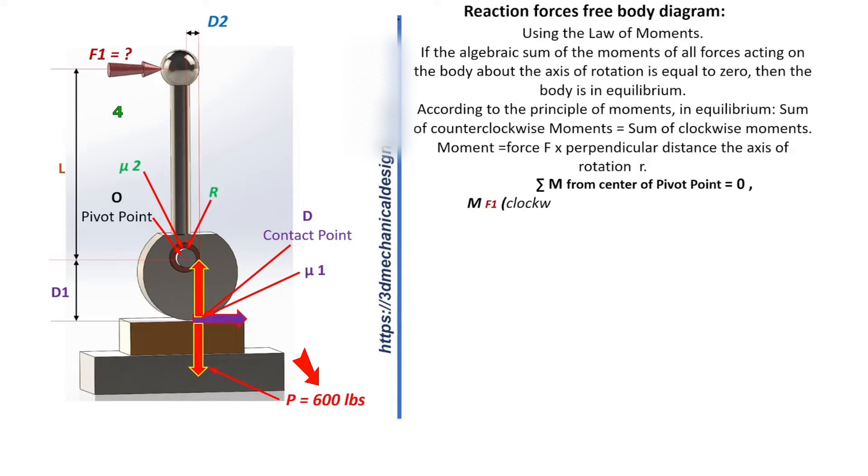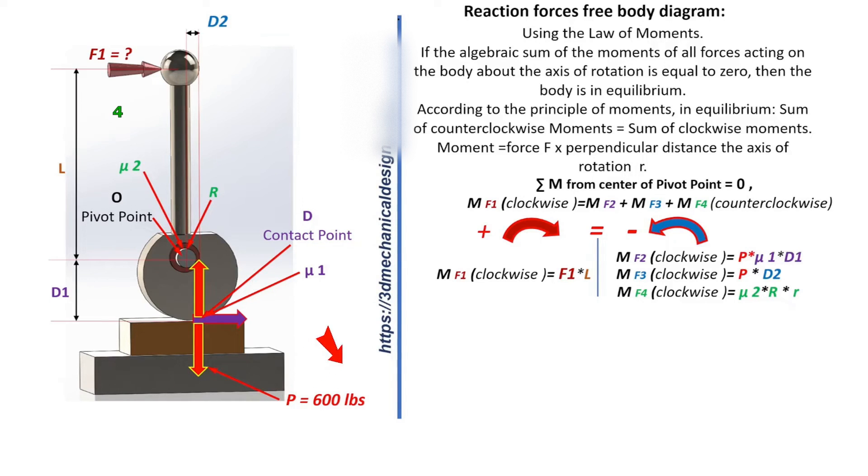MF1 (clockwise) = MF2 + MF3 + MF4 (counterclockwise). F1 × L = P × Mu1 × D1 + P × E + Mu2 × R × R.